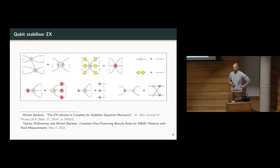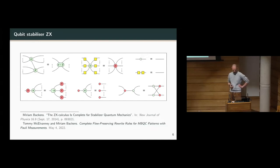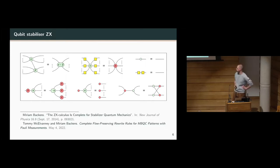This is the stabiliser fragment of quantum mechanics. For the qubit case there has been a sequence of papers on completeness results for the qubit stabiliser fragment, starting with Miriam's 2014 article and culminating in the paper with her student Tommy McElvaney presented at this conference. The axiomatisation for the qubit case has been reduced down to a pretty clean set of seven rules.